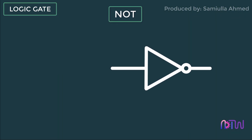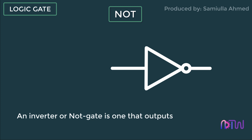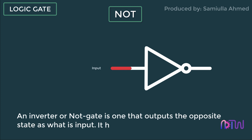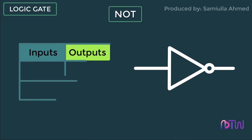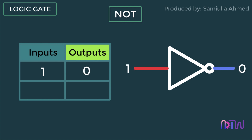Next we will see how the NOT gate works. An inverter or NOT gate is one that outputs the opposite state of its input. It has only one input and one output. If you provide an input signal of one, the output will be zero. And if you provide an input signal of zero, the output will be one. This is how the NOT gate works.